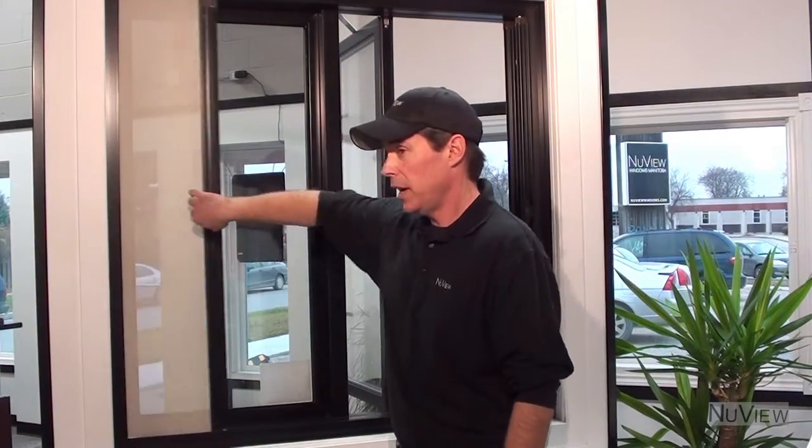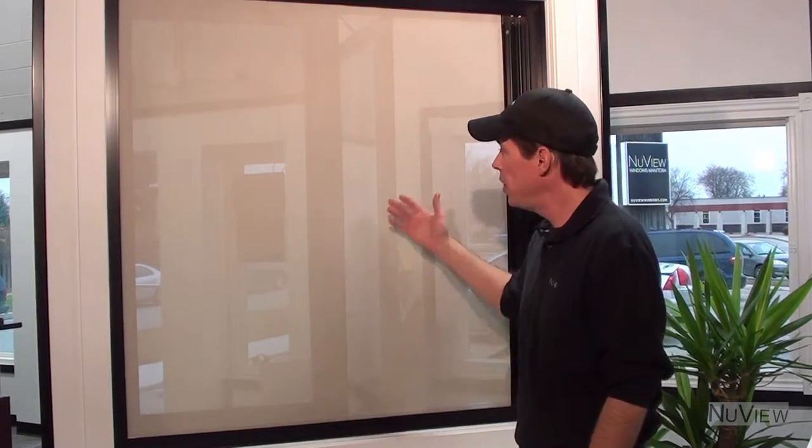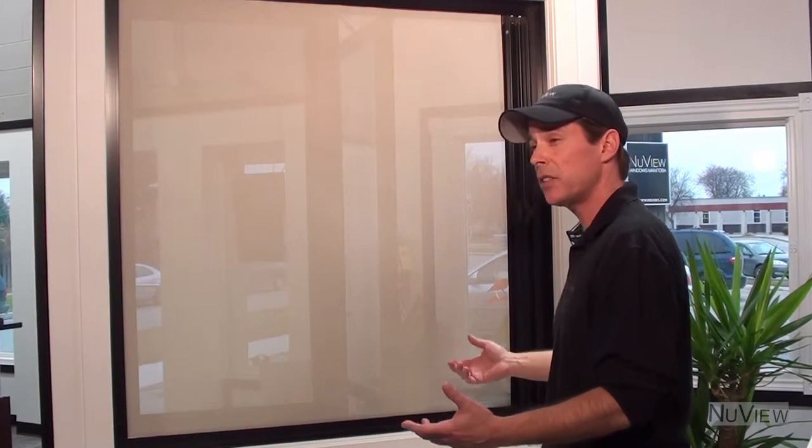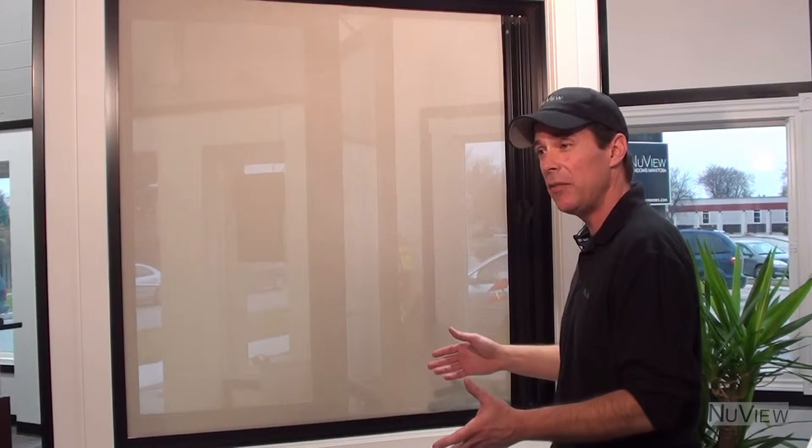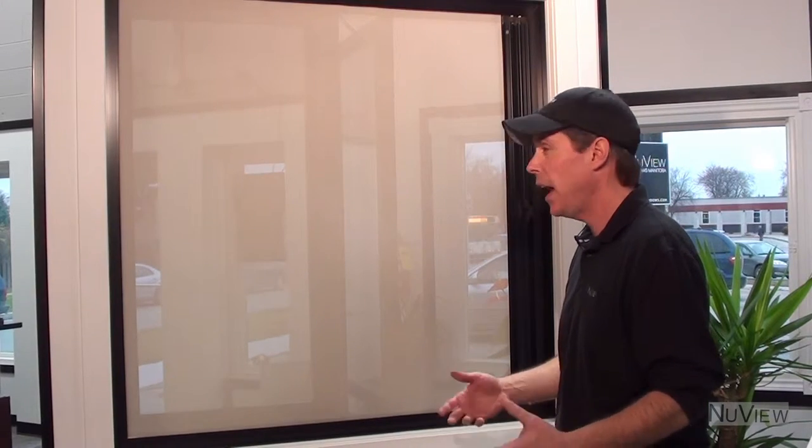As wonderful as the insect screen is with its functionality and convenience, we also have a solar screen built into the window. This is a 70% sunshade for windows that are on the south or the west face of the house. Especially in late afternoon or early evening, you get that direct sunlight coming in. In summertime, some rooms get so hot you can't even use them.